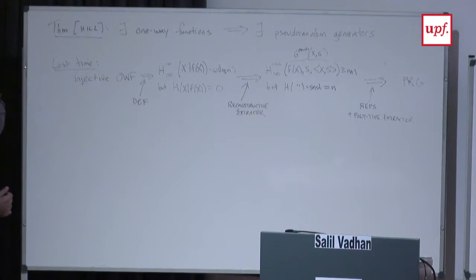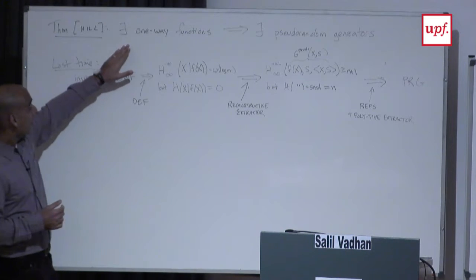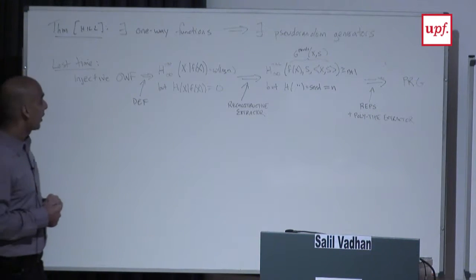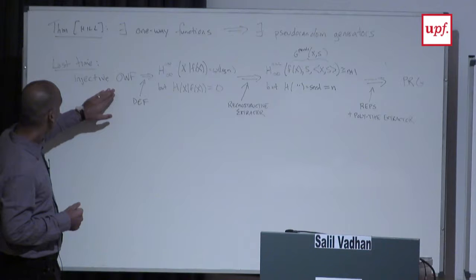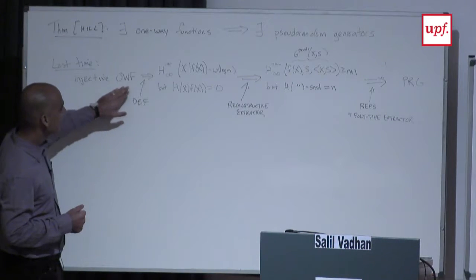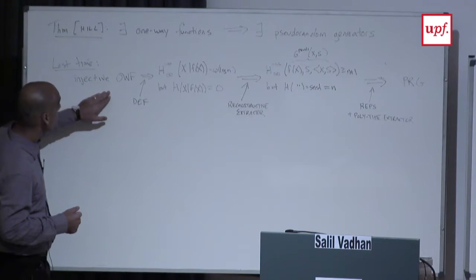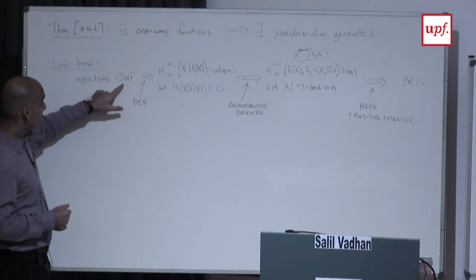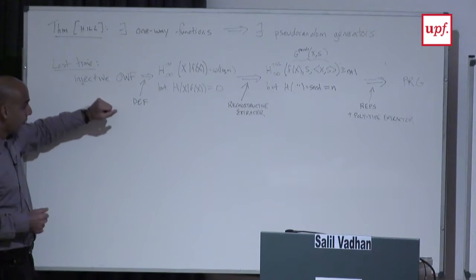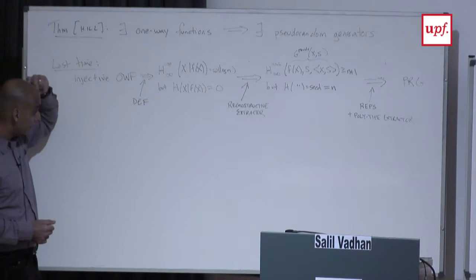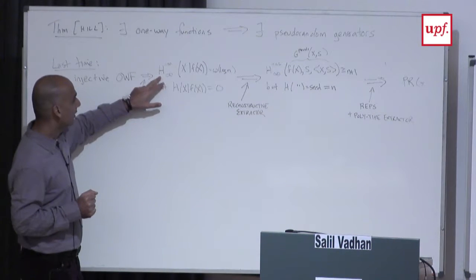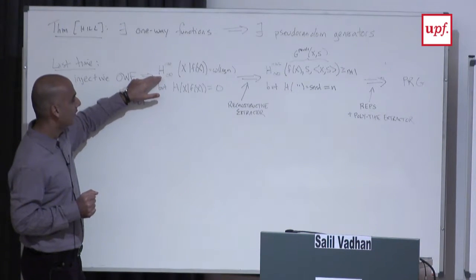What we saw yesterday was a version of this result for one-to-one injective one-way functions. The proof went in three steps. First, we interpreted the one-wayness property — the hardness of inverting the function f — in terms of a kind of pseudo-entropy, specifically unpredictability pseudo-entropy. The fact that it's hard to predict x from f(x) means that in some computational sense, x has a significant, super-logarithmic amount of pseudo-entropy given f(x).